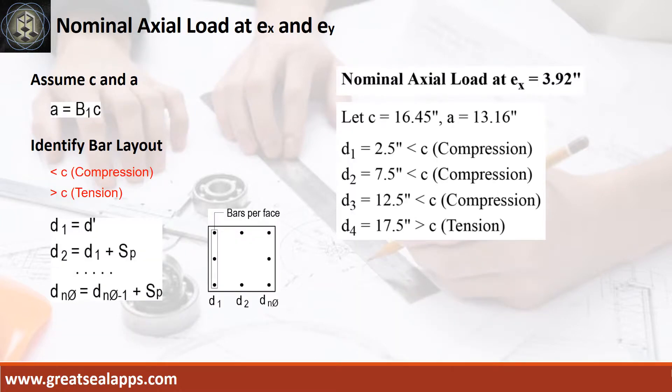To get the nominal load at EX equals 3.92 inches, let neutral axis C equals 16.45 inches and depth of stress block A equals 13.16 inches. Given column size of 20 inches and steel covering of 2.5 inches, apply the computations to get the following distances and force type of each layer of bars: D1 equals 2.5 inches (compression), D2 equals 7.5 inches (compression), D3 equals 12.5 inches (compression), D4 equals 17.5 inches (tension).